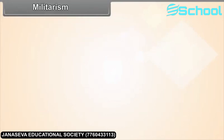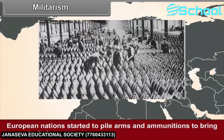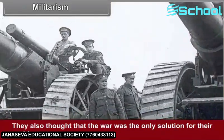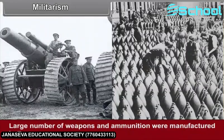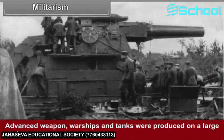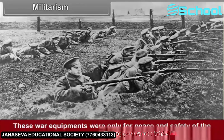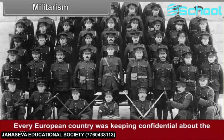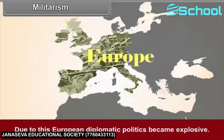Militarism: European nations started to pile up arms and ammunition to bring peace in their country. They also thought that war was the only solution for their problems. A large number of weapons and ammunition were manufactured in Europe. Advanced weapons, warships and tanks were produced on a large scale. These war equipments were considered only for peace and safety of the nation. Every European country was keeping its military power confidential. Due to this, European diplomatic politics became explosive.